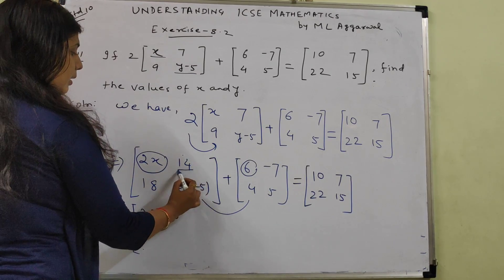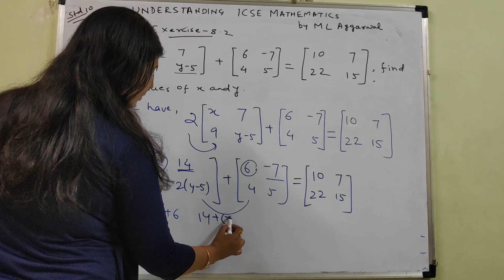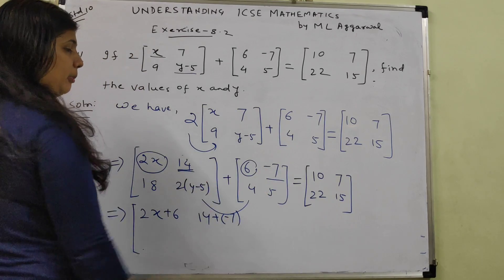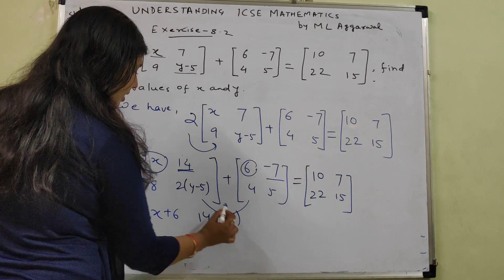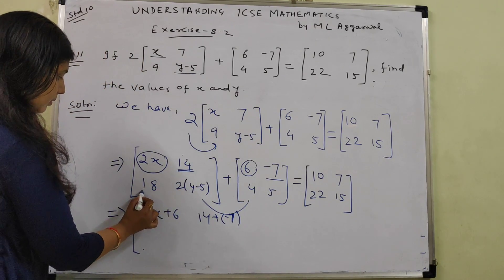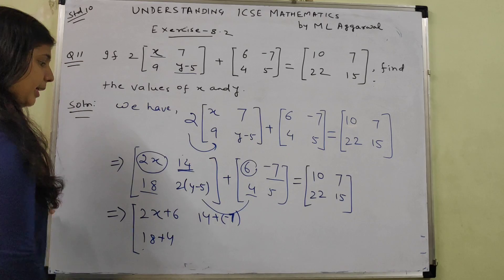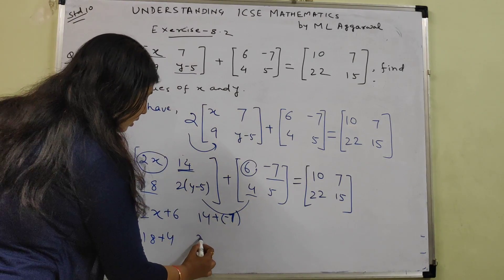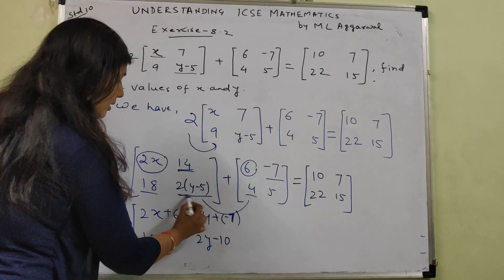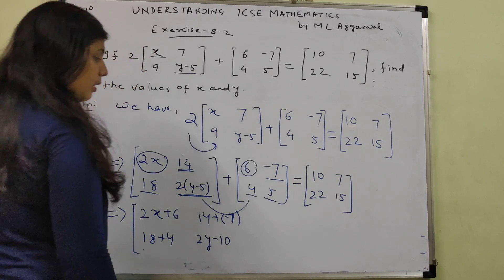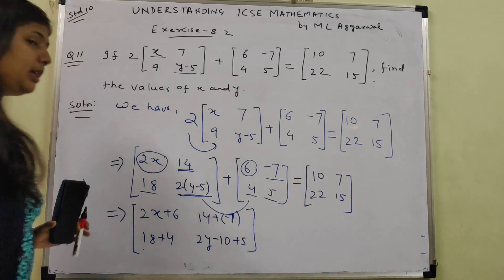Similarly, 14 and minus 7. Original sign of the element doesn't change. We have to put plus sign. This is minus 7. Now 18 and 4. And here we can split it like 2 into Y, 2 into 5 is 10. And this element and this element, corresponding elements will get added. Plus 5. Hope things are clear till here.